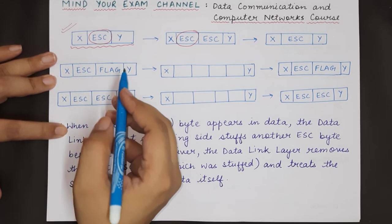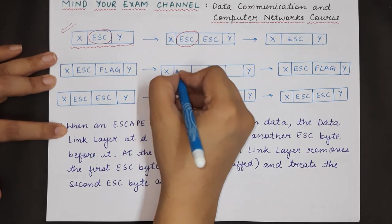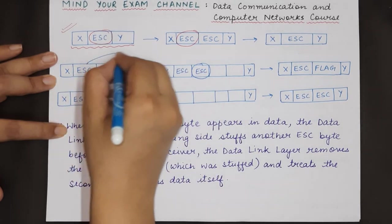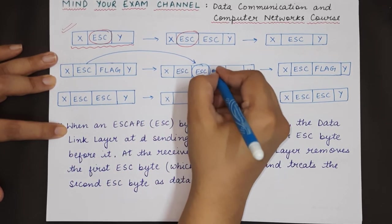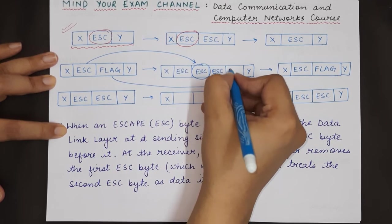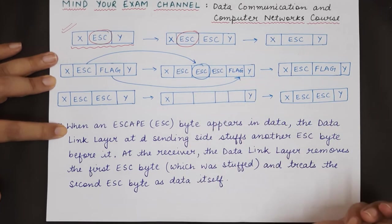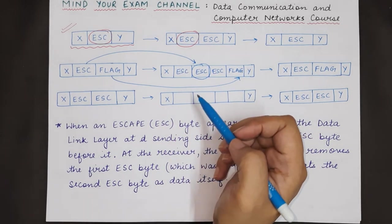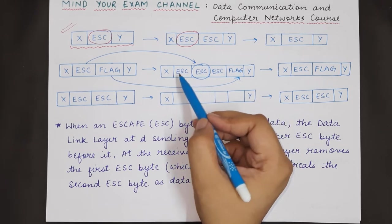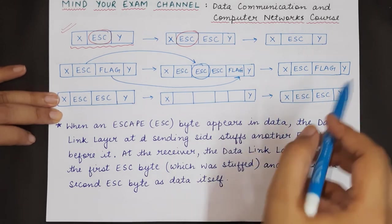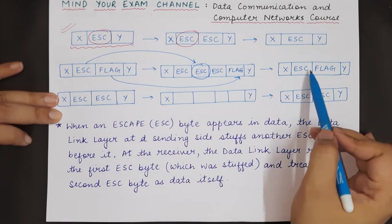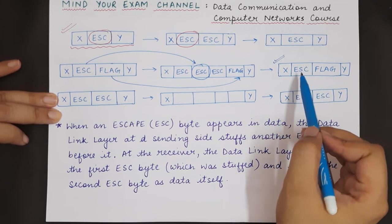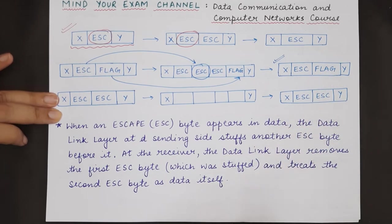If both an escape byte pattern and a flag byte pattern appear in the data, we add an escape byte in front of both of them — one escape byte for the escape pattern and one for the flag pattern. When the receiver receives this data stream, it removes the first two escape bytes, and the data sent to the network layer is identical to the original, containing both the escape bit pattern and the flag bit pattern.